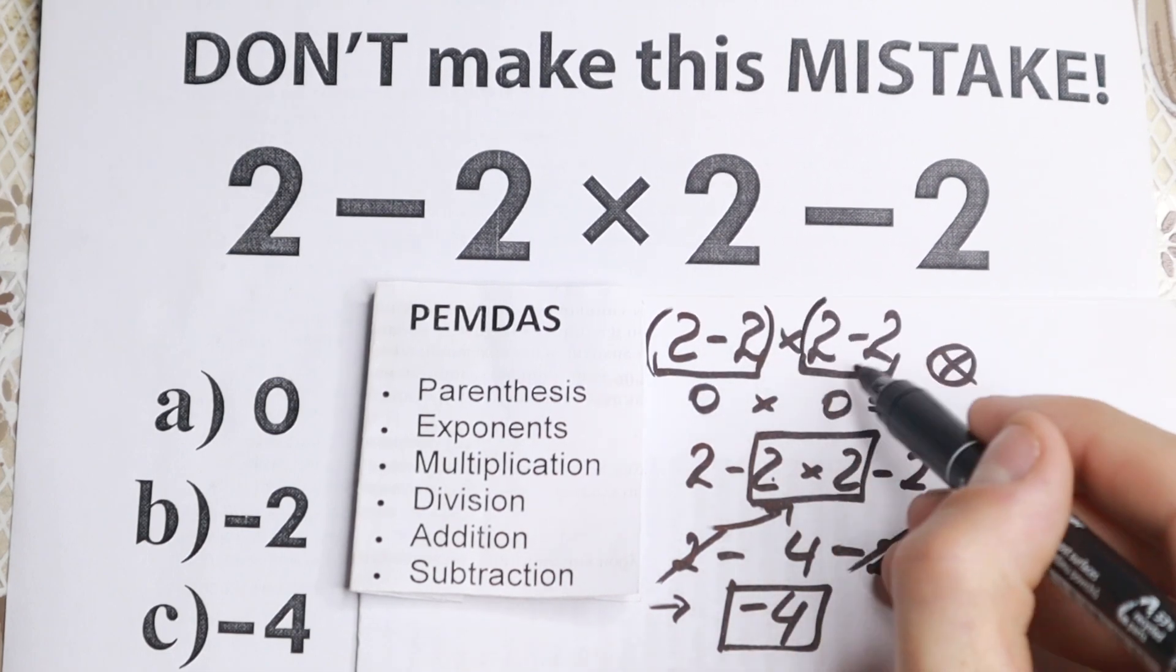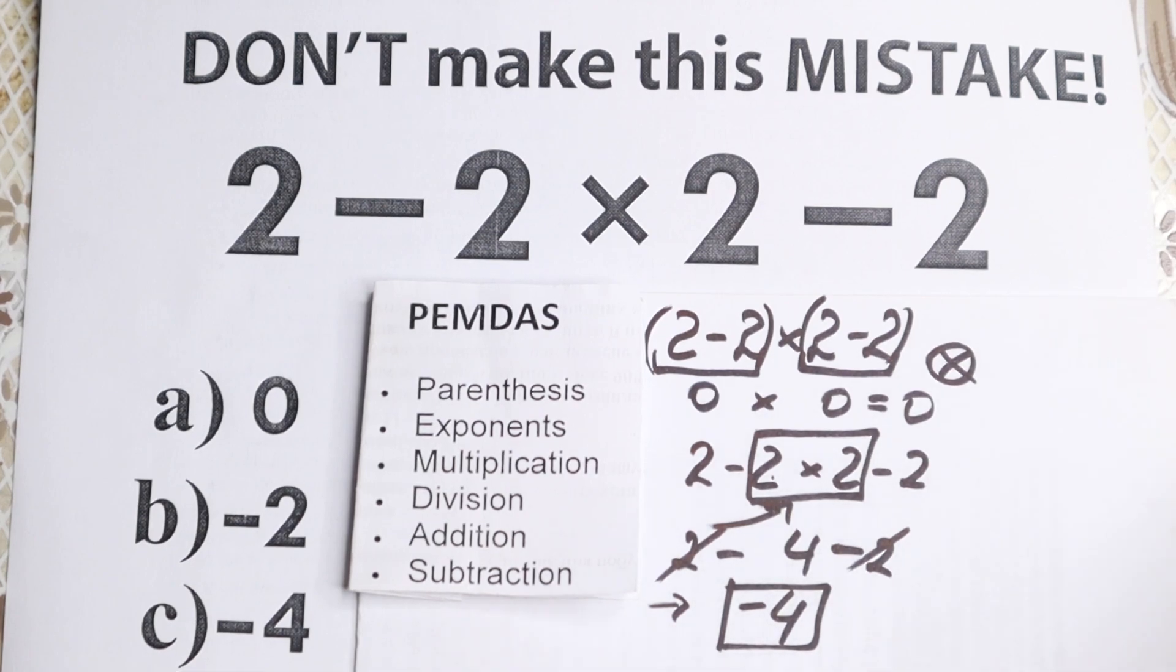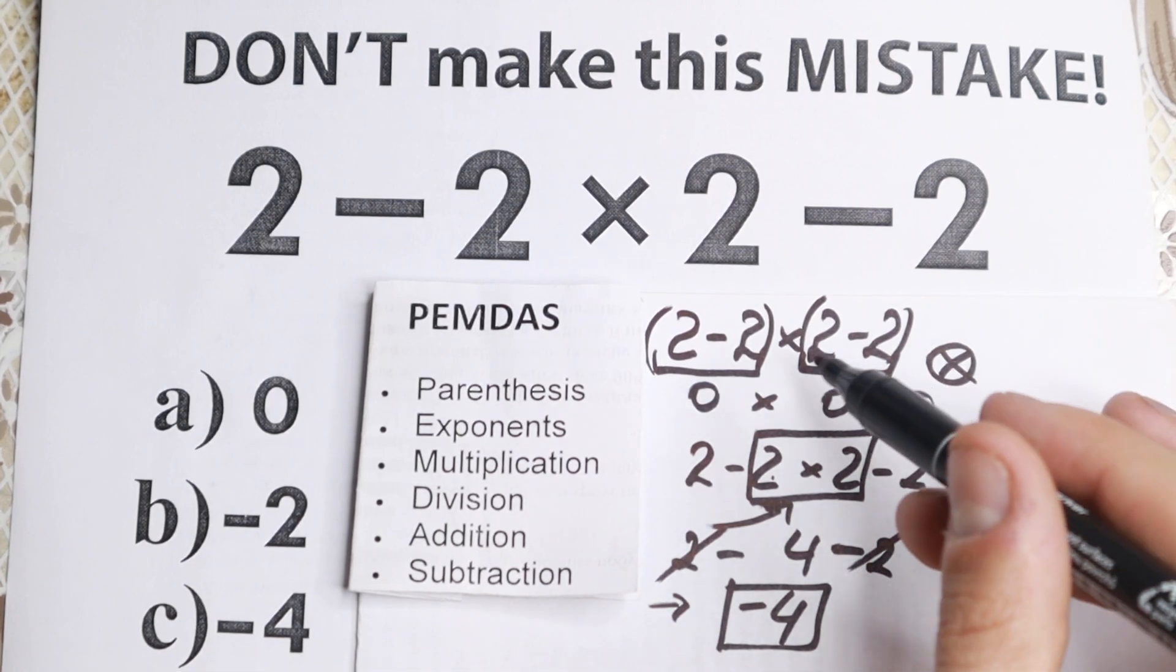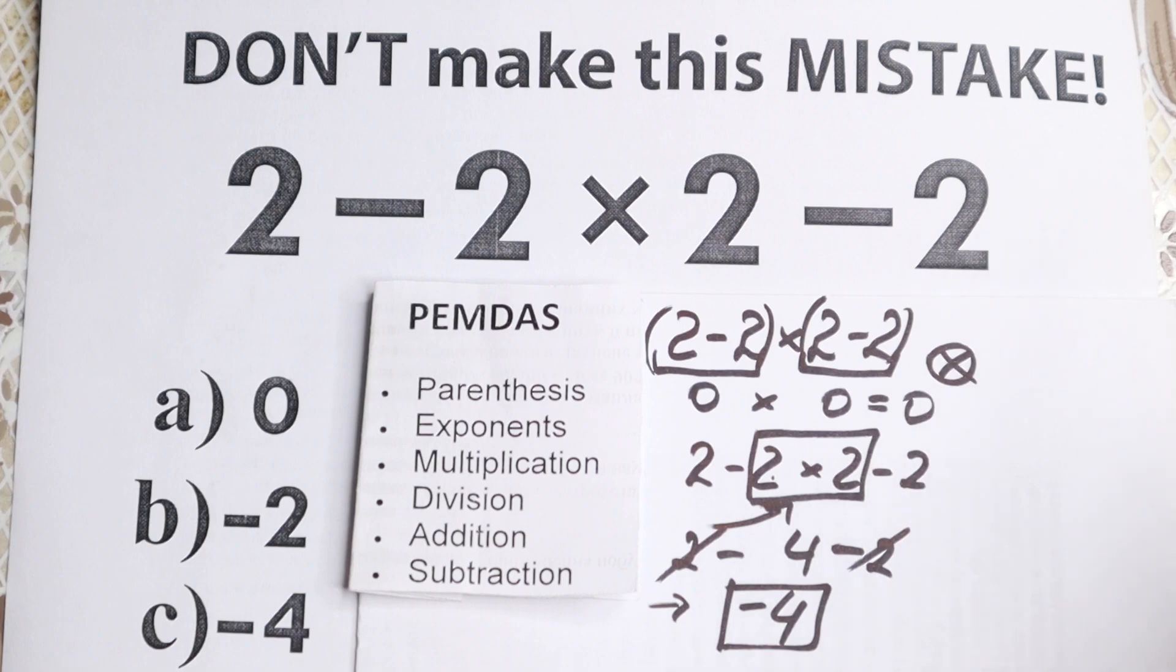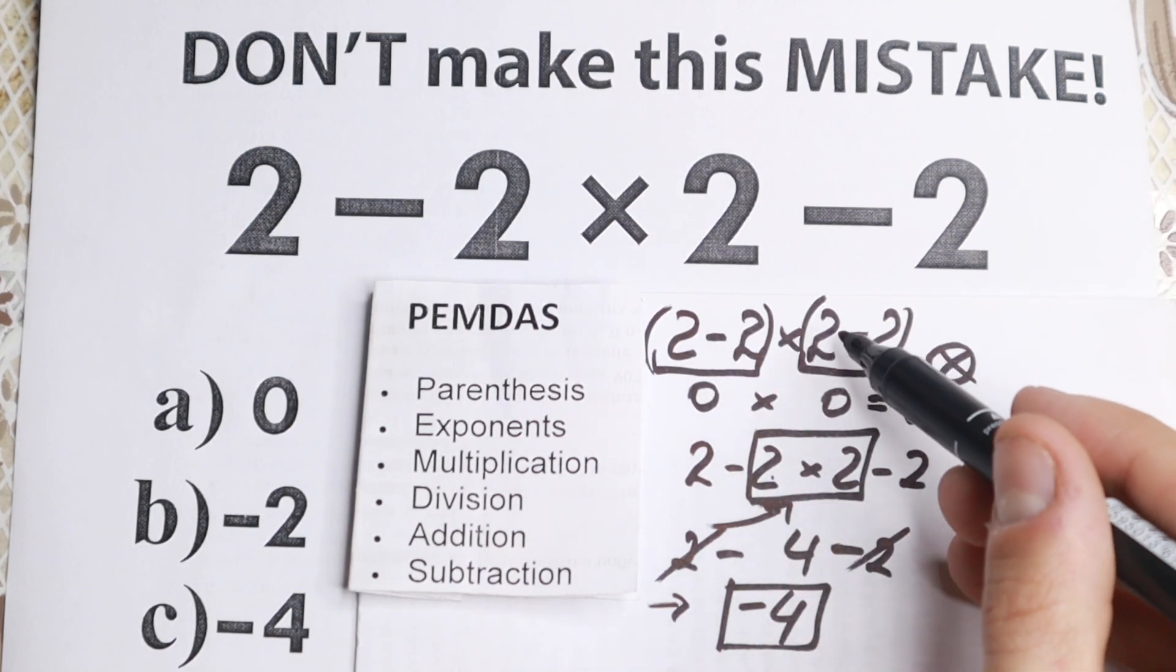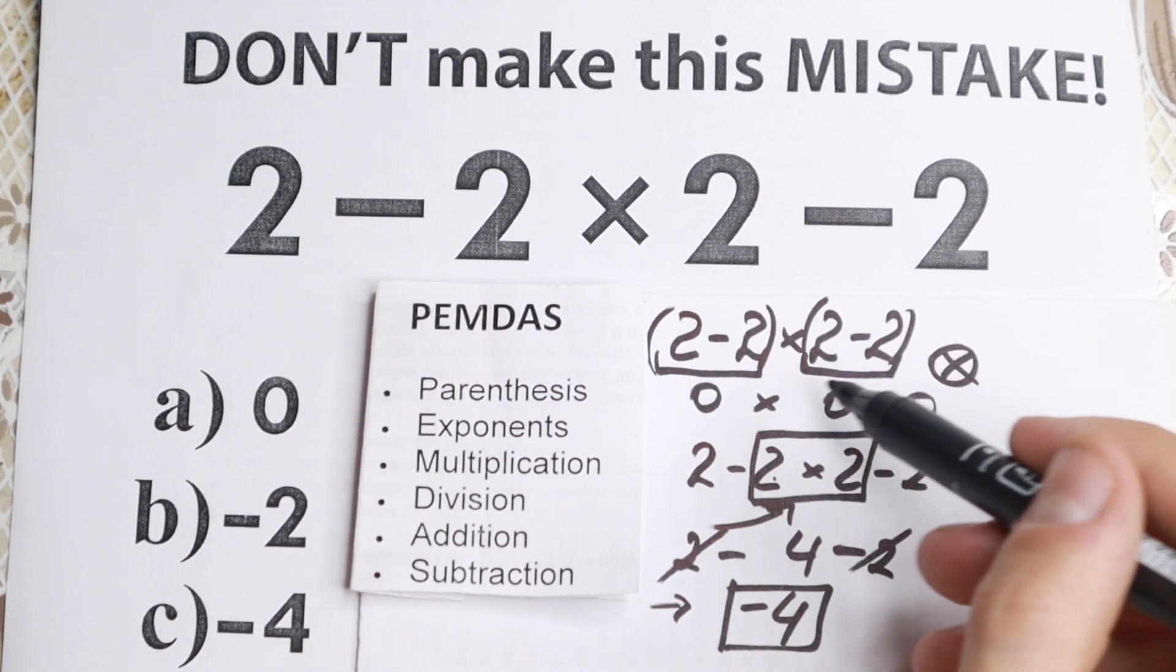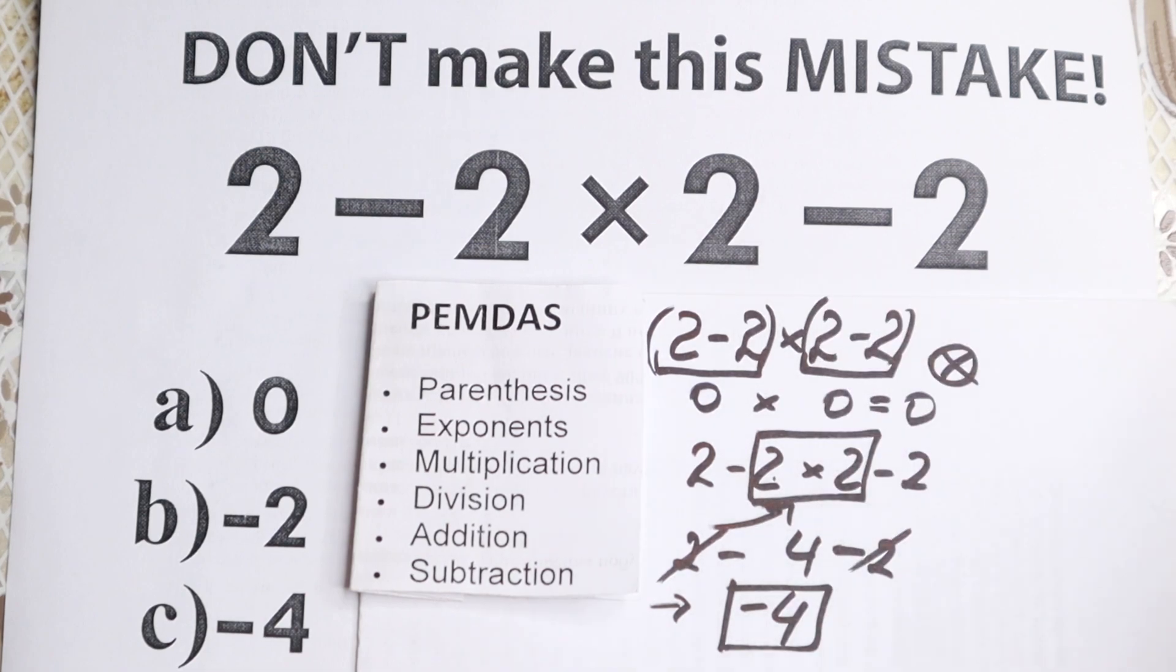we need to start with this one, because this is the first step, so it doesn't matter, maybe we'll have like BODMAS. So if you have BODMAS you need to start with parentheses, and in PEMDAS you need to start with parentheses. So we start with parentheses 0, right here 0, and you will have answer 0 according to PEMDAS, but we have parentheses, in our case we don't have parentheses.